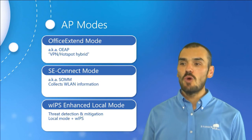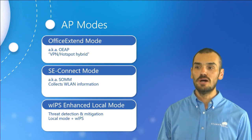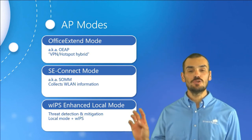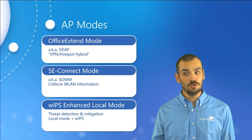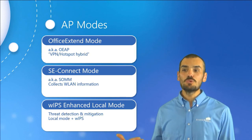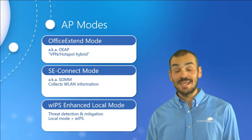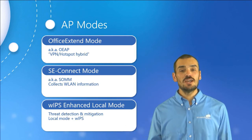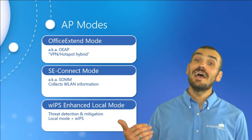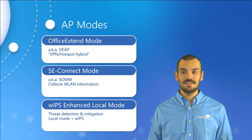Finally, we have the Wireless Intrusion Prevention System, or WIPS, enhanced local mode. This provides wireless threat detection and mitigation while still operating in the local mode. All packets on the servicing channel are scanned, eliminating the need for an overlay network that provides scanning. However, this does require an additional Cisco product — the Mobility Services Engine — as well as Prime Infrastructure with the WIPS licensing.